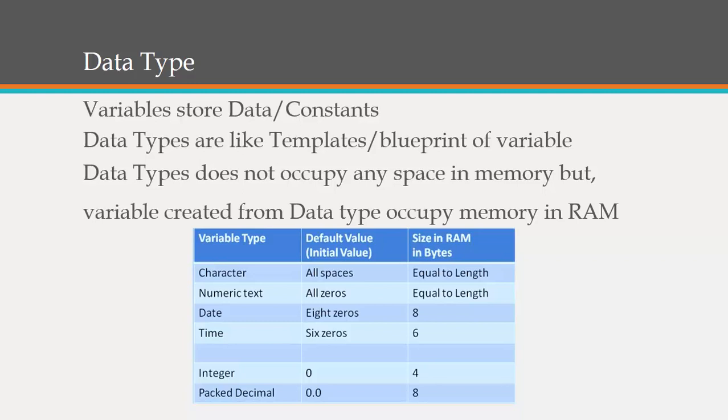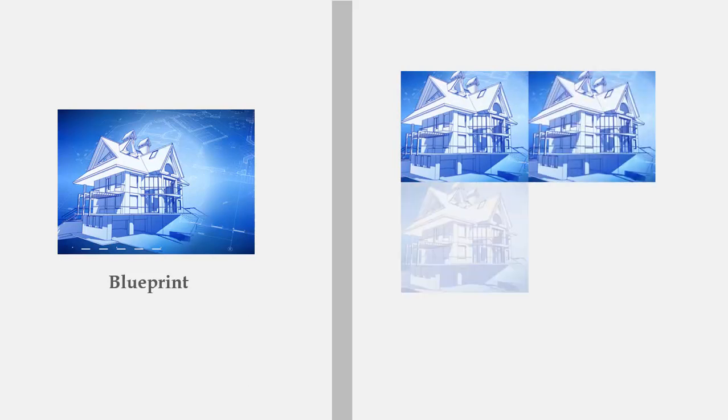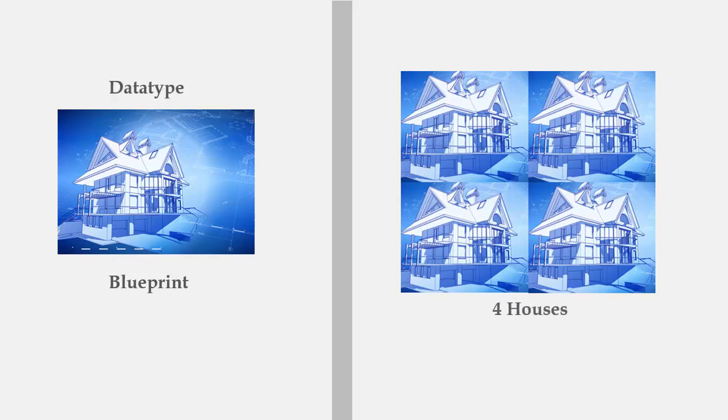To explain it more clearly, consider a data type as a blueprint of a house. From that blueprint you can create any number of houses. In our next slide, a blueprint of a house is shown, and from that blueprint we are creating four physical houses. A data type is basically like a blueprint, whereas the four physical houses are like variables. No memory or space allocation is done when a blueprint is created — a blueprint can be kept in your pocket — so no memory or space allocation is required.